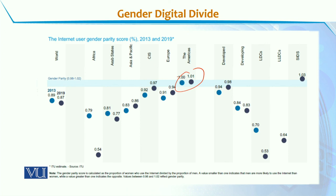In Europe the score is close to the ideal value, and in the developed world in recent years this value has been achieved. In the developing world or in the least developed countries, the values are quite low historically. So the problem is not that internet access has not increased — access across the globe has increased — but the female population's access is still limited as compared to the male population across the globe.